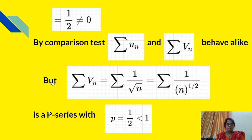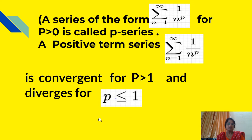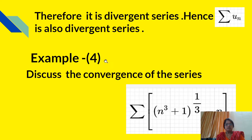Here Σvn = Σ 1/√n = Σ 1/n^(1/2). This is a p-series with p = 1/2, which is less than 1. A p-series Σ 1/n^p is convergent for p > 1 and divergent for p ≤ 1. Therefore Σvn is divergent, and hence Σun is also a divergent series.